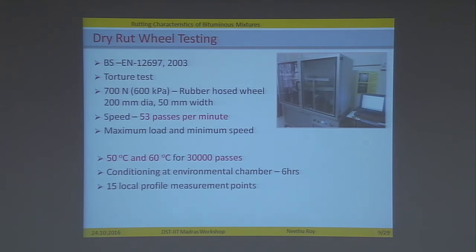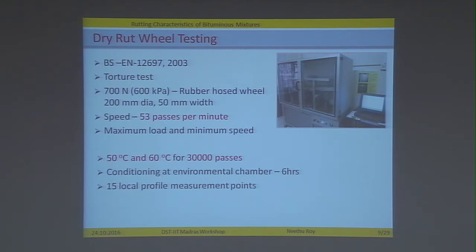For the dry rut wheel testing, using British standards, a 700 Newton load is applied through a rubber hose wheel of 200 mm diameter and 50 mm width. The speed chosen was 53 passes per minute — a to-and-fro application of load on the specimen — which is the maximum load and minimum speed possible in the dry wheel test so as to get the maximum effect on the material. The test was conducted at 50°C and 60°C for 30,000 passes, with specimens conditioned in an environmental chamber for 6 hours. Rut depth is the average of 15 local profile measurements.